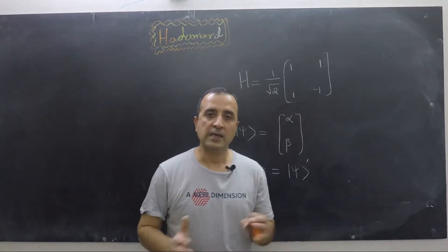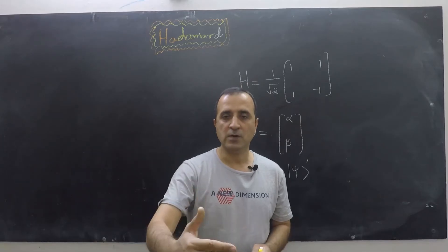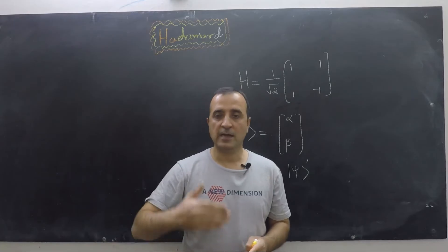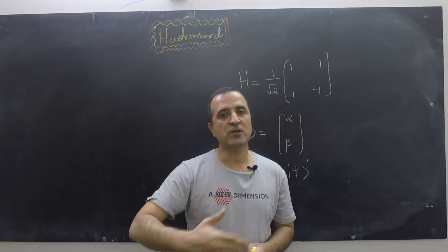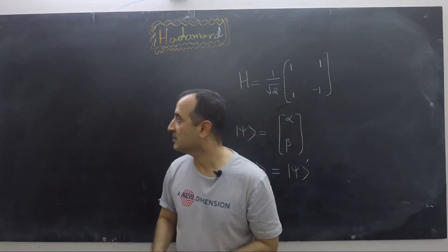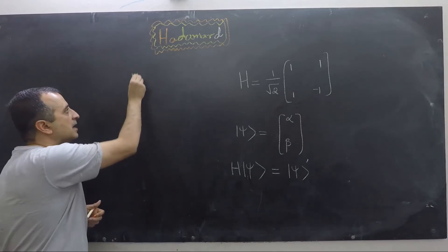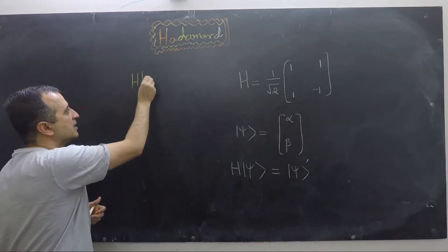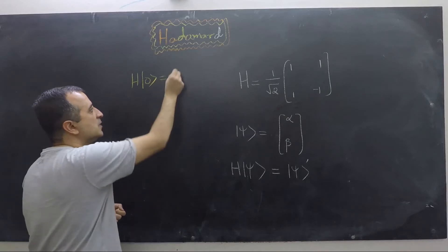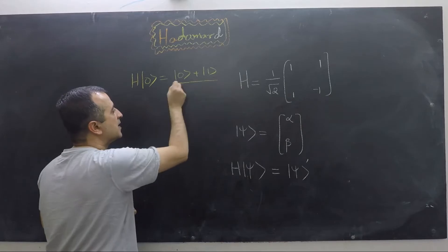A key use of the Hadamard gate is that you give it a qubit in a pure state, and the Hadamard gate creates a qubit in equal superposition. For example, if I apply the Hadamard gate on |0⟩, my answer is going to be (|0⟩ + |1⟩) / √2.